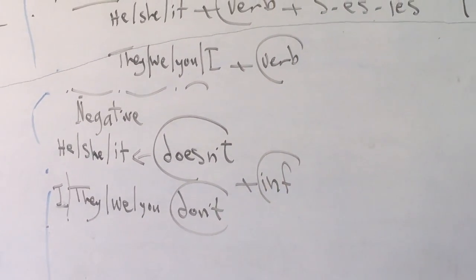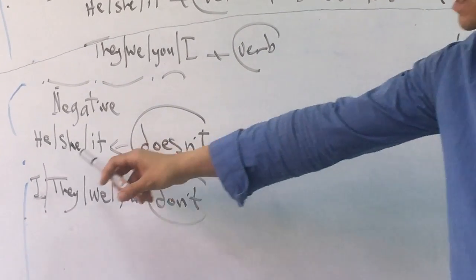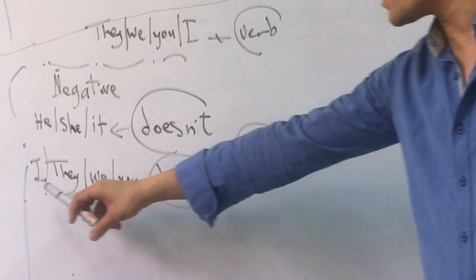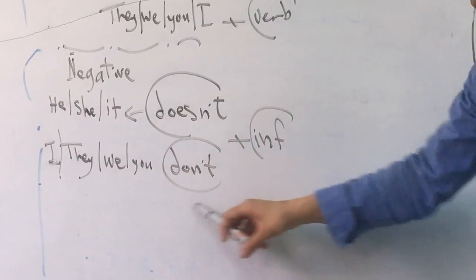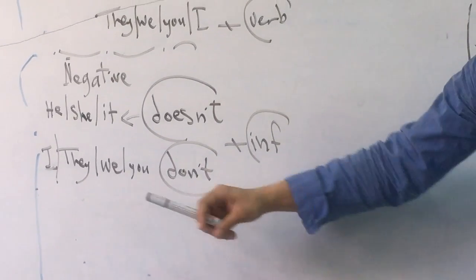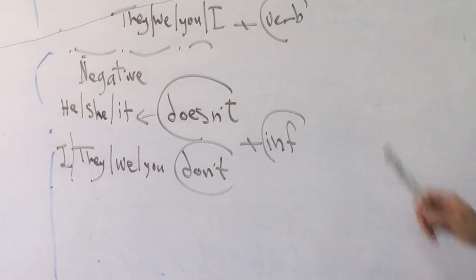What about the negative? If I want to change it to negative, you have to use doesn't with the singular he, she, it, and don't with the plural I, they, we, you. With the base form, with the infinitive. She doesn't read. They don't come.